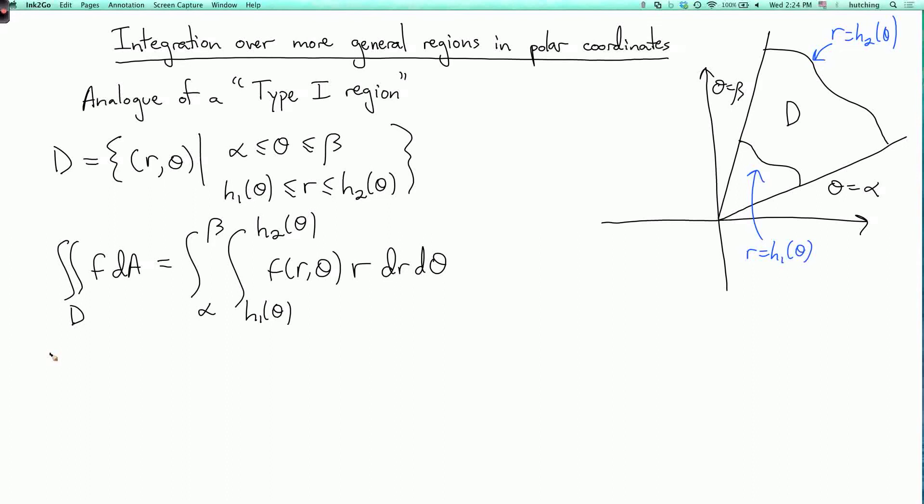So let's do an example. Let's calculate the double integral over D of x squared plus y squared dA, where D is as follows. I take the curve r equals theta like this until it hits the x-axis again, and then I take the curve r equals 2 theta like this. So this is the region in between these two curves and this little piece of the x-axis.